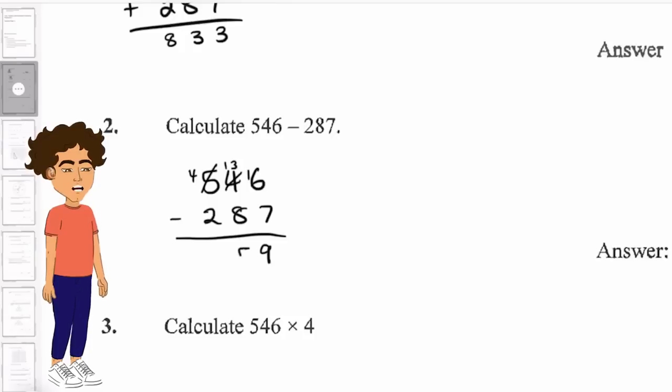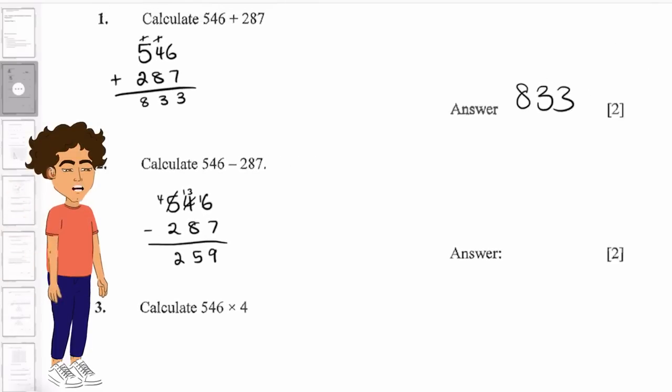We can have 13 take away 8, which gives us 5. And then 4 take away 2 gives us 2. So our answer is 259. I hope those two questions were clear.